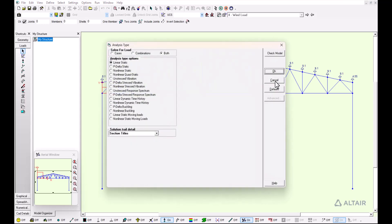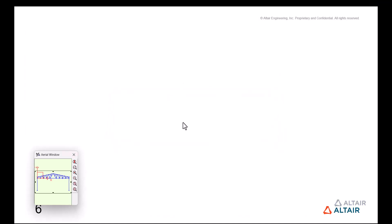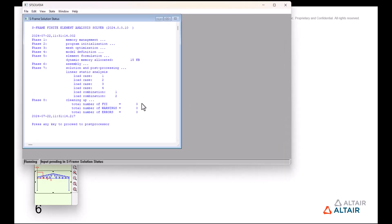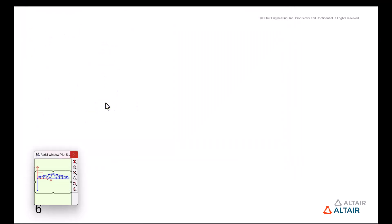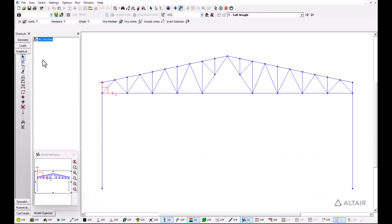With that done, we can go ahead and run an analysis in S-Frame. We got a clean analysis. We created two load combinations to better represent the action of all these loads in the frame: a live load and a dead load combined.